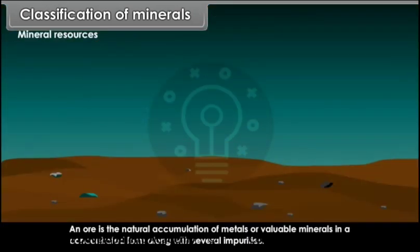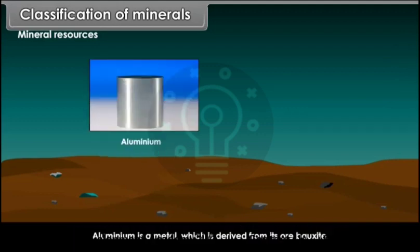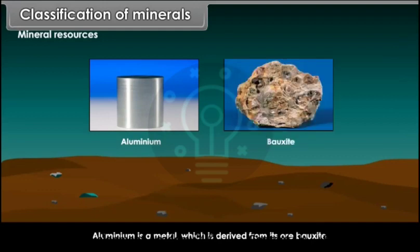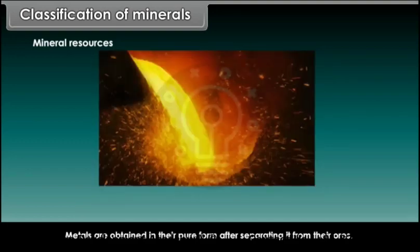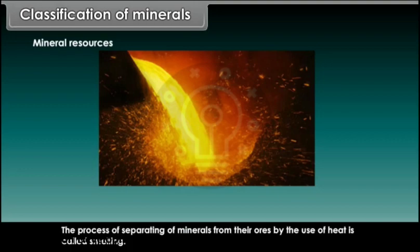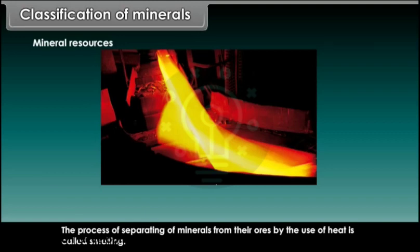An ore is the natural accumulation of metals or valuable minerals in a concentrated form along with several impurities. For example, aluminium is a metal which is derived from its ore bauxite. Metals are obtained in their pure form after separating them from their ores.